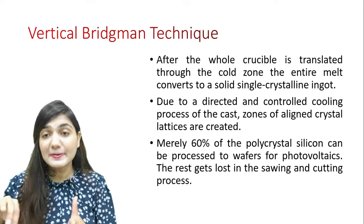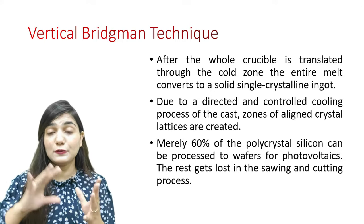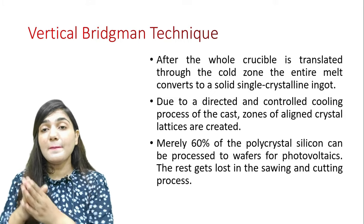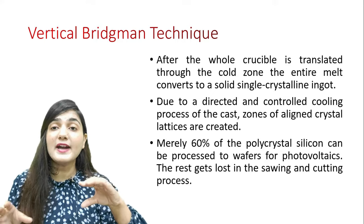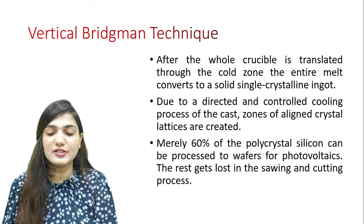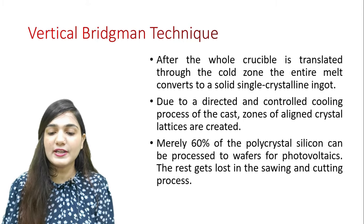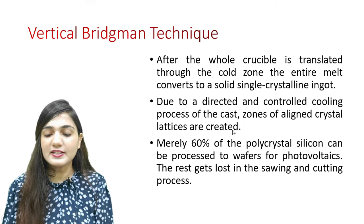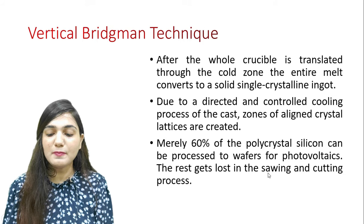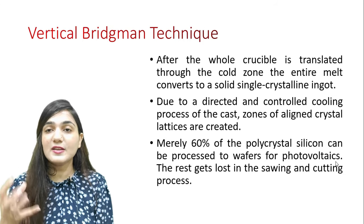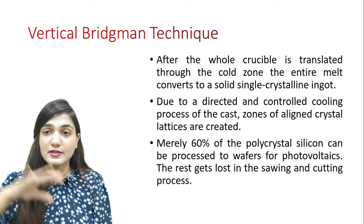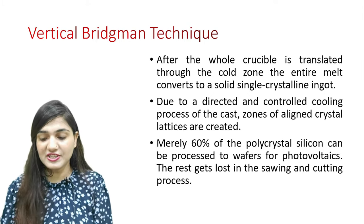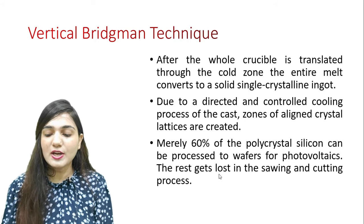After the whole crucible is translated through the cold zone, the entire melt converts to a solid single crystalline ingot. Impurities prefer to remain in the melt, so the solid part becomes a highly pure structure — purity increases. Through directed and controlled cooling, zones of aligned crystal lattice are created. About 60% of the polycrystalline silicon can be processed into usable wafers for photovoltaics.